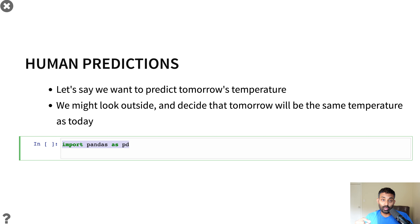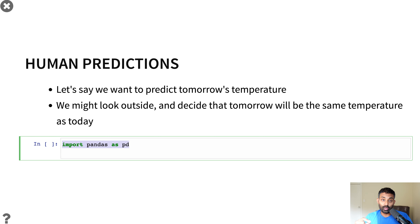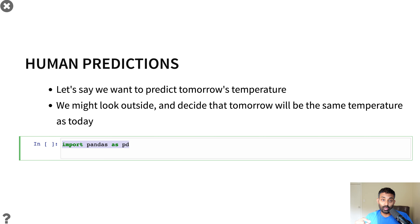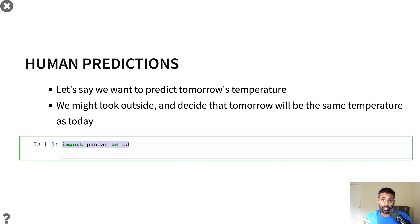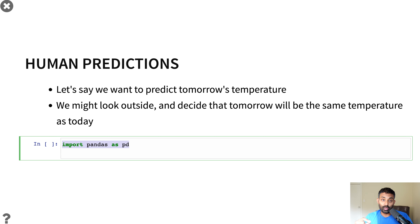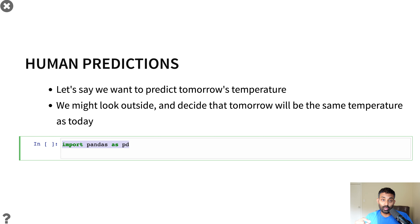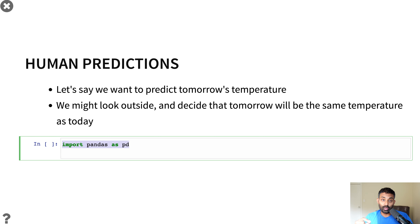I'll write code that reads in expert_error.csv, where I've already applied these rules and calculated the error. Then, just like before, we take the mean of the error column. We can see the same table as before with the same error column, but some values are now different. The error with this expert systems technique is 3.05, so on average we're within 3.05 degrees of the actual temperature.